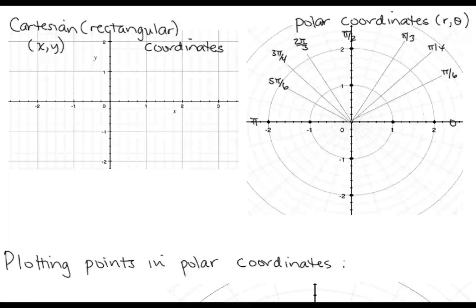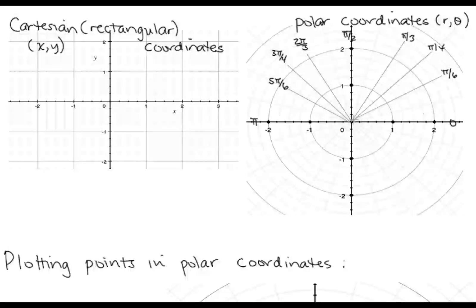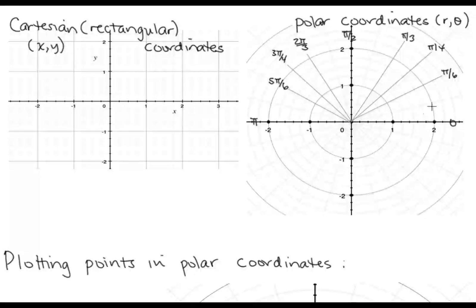Before we start plotting points, let's think about how we plot in rectangular coordinates. We're given an x and a y value, so we move over x units and up y units. In polar coordinates, we're given an r value and a θ value. What we want to do is start with the θ value, find that angle, and then go out r units in that direction. For example, (2, π/3): we would go up to π/3, and then we would go out two units in that direction.